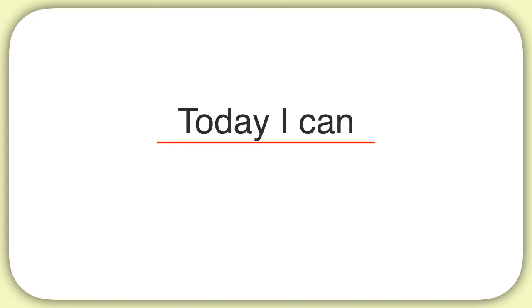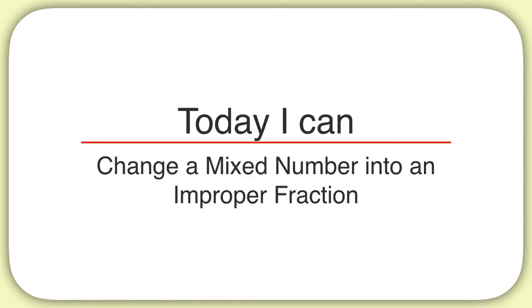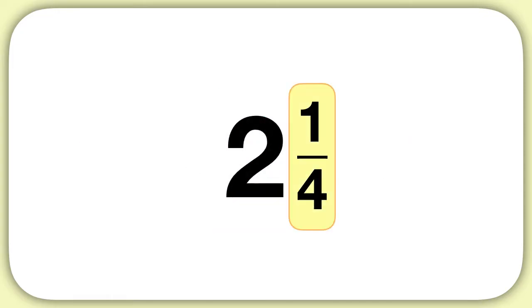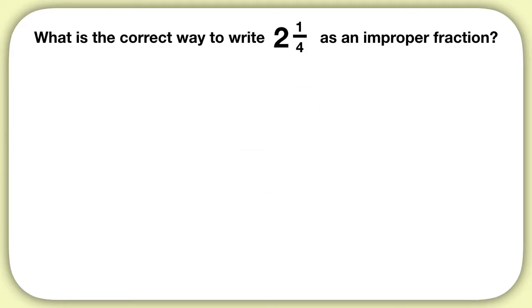Today we are learning how to change a mixed number into an improper fraction. Mixed numbers look like this, with a whole number and a fraction put together. Let's say we're asked: what is the correct way to write 2 and 1 fourth as an improper fraction?